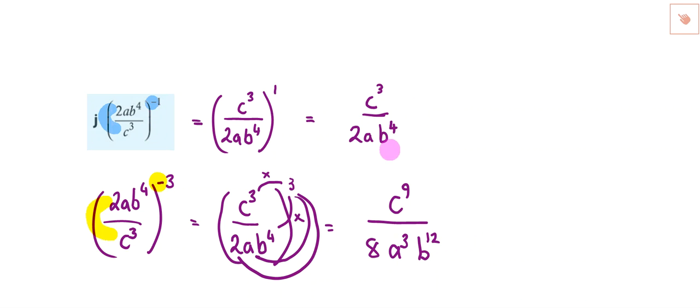So that's the difference. If it's negative 1, we are just finding the reciprocal. If it's negative 3, we find the reciprocal and then apply the exponent.